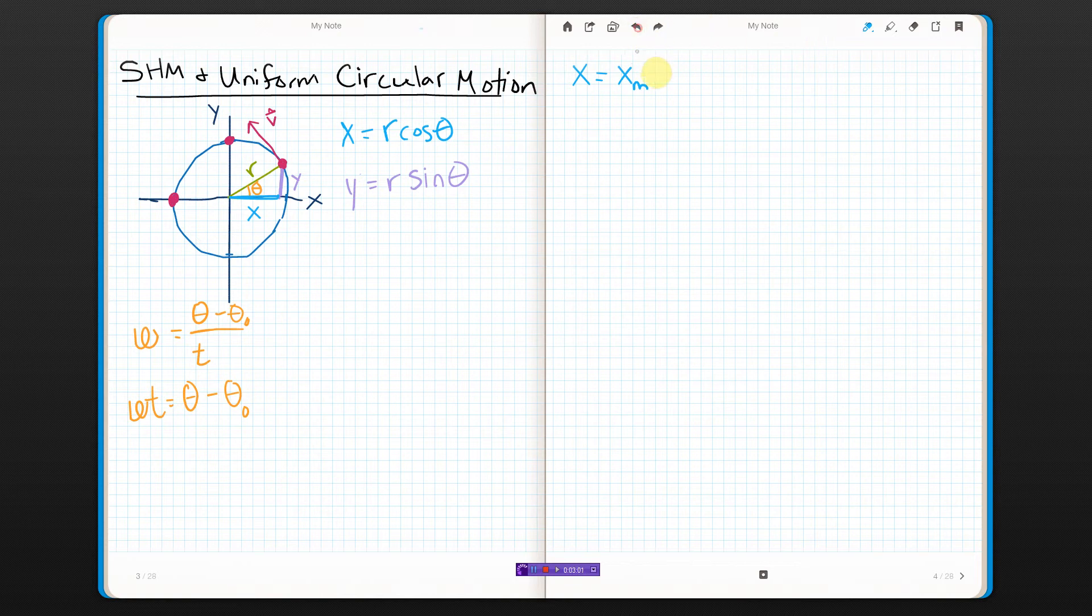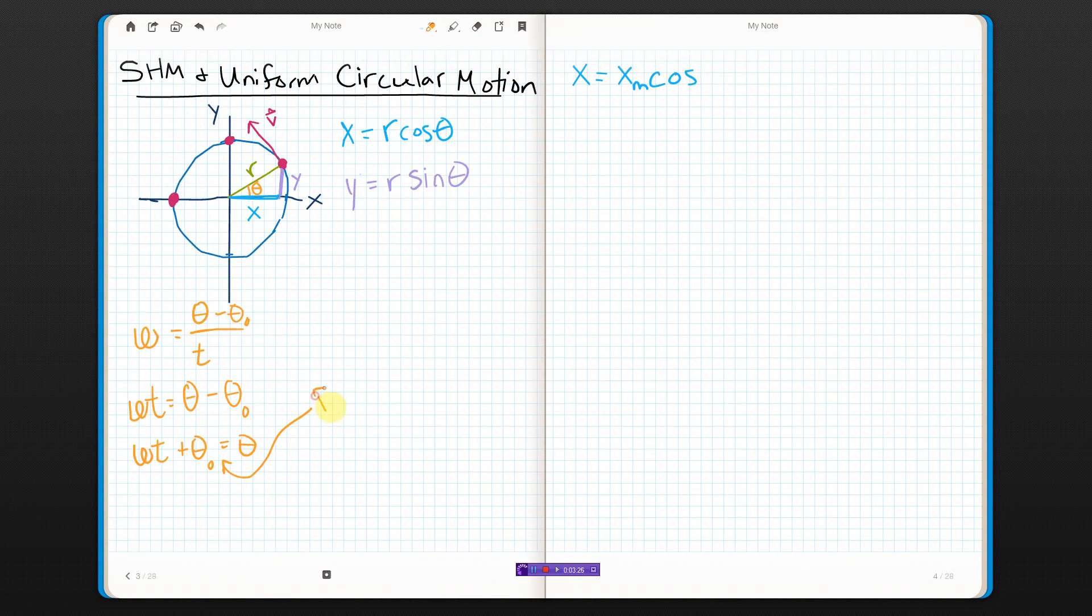So I could rewrite this, I can rewrite this where R is X max, or the amplitude, the largest amplitude that it can have in X. Cosine, now theta, if I go back over here, theta would be omega T plus initial angle. I'm going to go one step further. Initial angle, the angle at which something starts, is called the phase angle. We've been calling it phi. So really, theta, the angular position, is the angular velocity times time plus phi, the initial angular position.